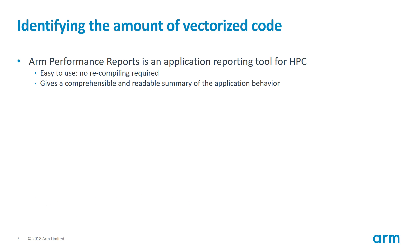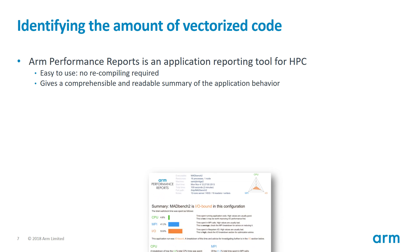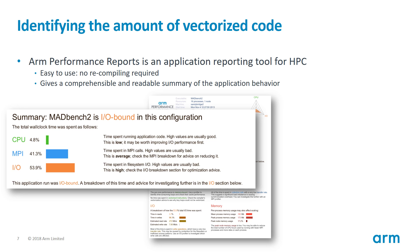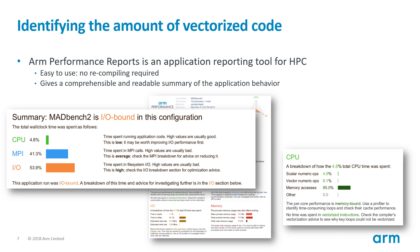Now that we understand the hardware mechanism of vectorization, how can we check that this is used in real applications? Here is where ARM Performance Reports can help. Firstly, this tool provides you with an explicit and usable output that will describe the behavior of the application and whether or not vectorization is being used. Secondly, to get started with Performance Reports, you don't need to recompile your code or use any instrumentation — just use your existing executable. Thirdly, Performance Reports has a low overhead, so the behavior you see in the report is not disturbed by the tool itself. And finally, you can integrate Performance Reports easily into your workflow.